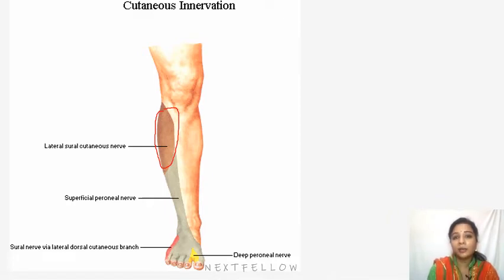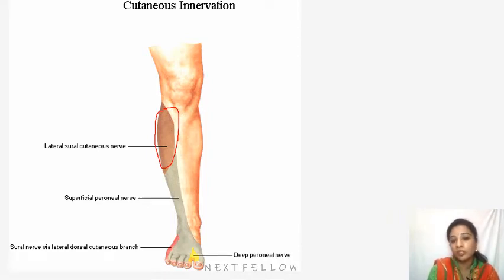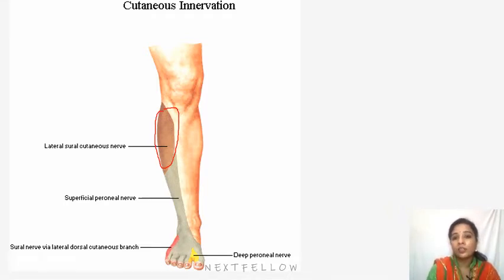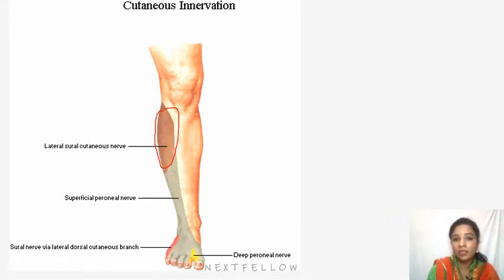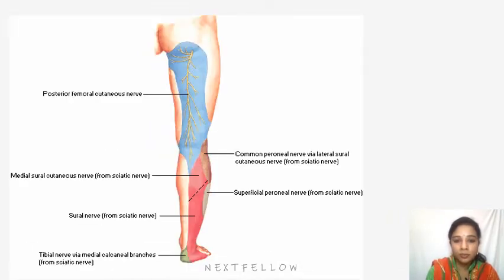The cutaneous area supplied by the common peroneal nerve and its terminal branches includes the anterolateral side of the leg, and most of the dorsum of the foot is supplied by the terminal branches, which we will discuss later. It gives rise to a sural communicating nerve, which arises near the head of the fibula, crosses the lateral side of the gastrocnemius to join the sural nerve, and descends separately as far as the heel. The cutaneous distribution is only a little part on the lateral side just below the knee.